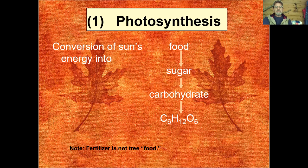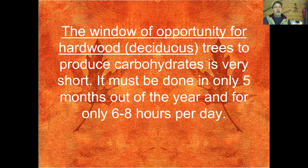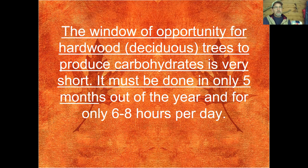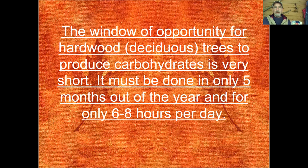Photosynthesis produces this carbohydrate molecule. For hardwood deciduous trees, the window of opportunity to produce carbohydrates is very short — it must be done in only about five months out of the year, and even during that time only about six to eight hours a day, because no photosynthesis occurs at night. And when it gets really hot outside, photosynthesis shuts down because the loss of water is so great that the tree can't afford to lose any more. So in roughly a thousand hours out of 8,700-plus hours in a year, it better be very good at creating food.